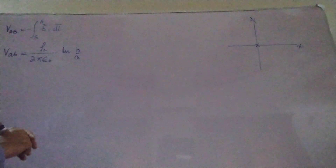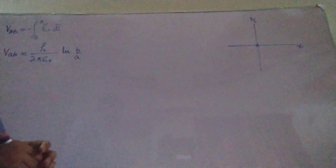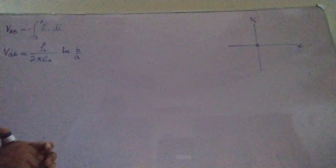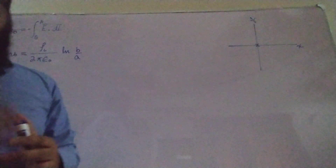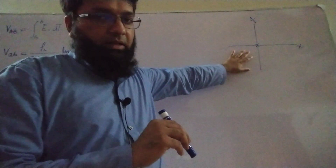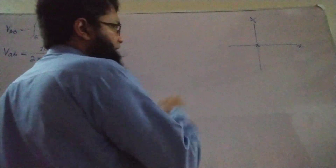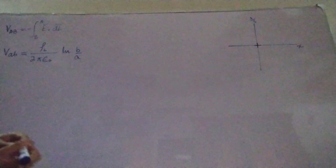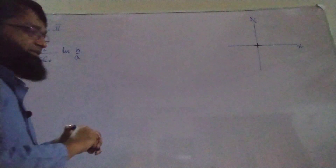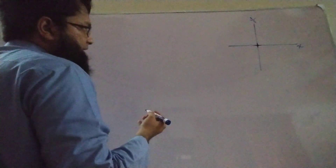If the source charge distribution is an infinite uniform line charge density, the best way to locate it is on the Z-axis, to take advantage of the symmetry of the cylindrical coordinate system. Here we have the X-axis, Y-axis, and Z-axis coming out of the board, and on the Z-axis that infinite line charge distribution is located — infinite in length with constant charge density rho L.